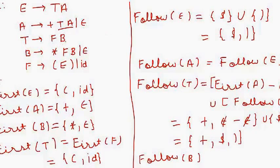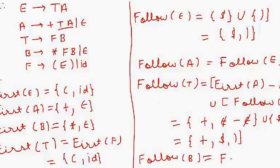For Follow of B: in the right hand side there is nothing following B, so Follow of B equals Follow of T. Therefore Follow of B equals { '+', $, ')' }.